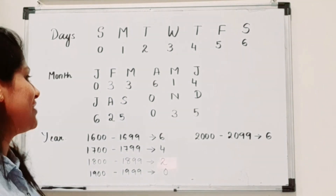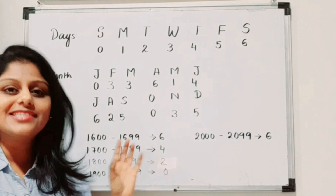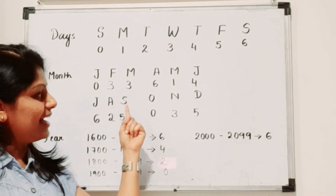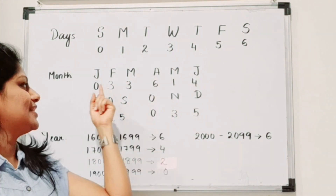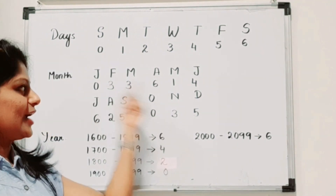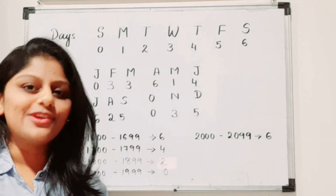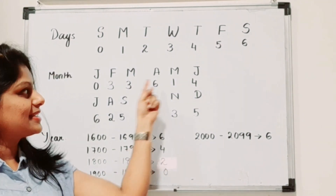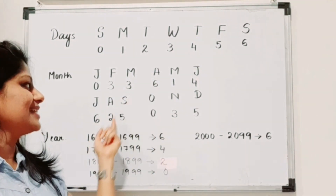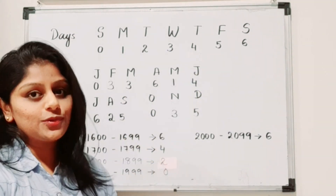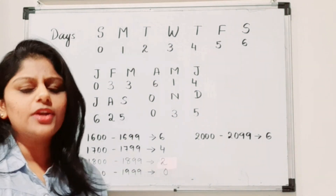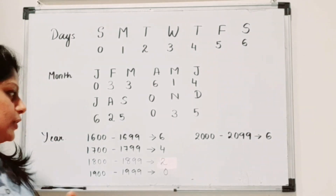Here's how to remember the month codes: the first group (January, February, March) gets the code 0, 3, 3. The last group (October, November, December) gets 0, 3, 5. For the two middle groups: April, May, June gets 6, 1, 4 and July, August, September gets 6, 2, 5. So the full sequence is 033, 035, 614, 625. Write it two or three times and you'll definitely remember it.